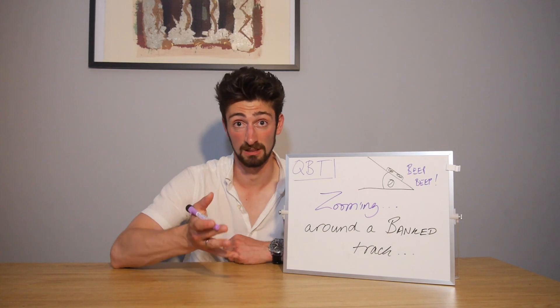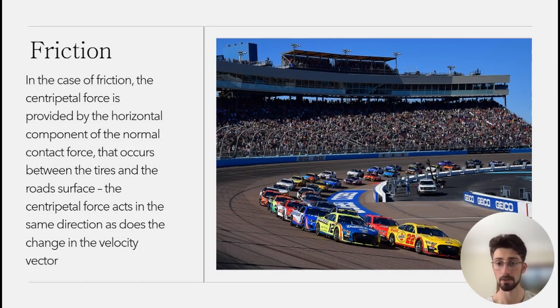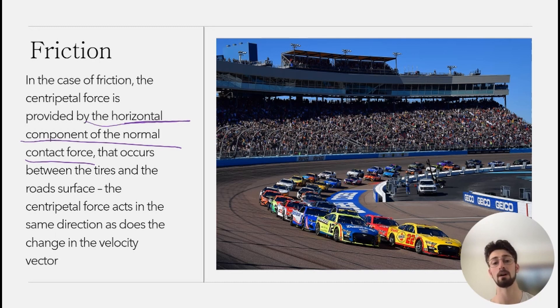Okay, welcome back. So let's talk about friction for a little bit. Let's talk about banked tracks and what that means in terms of circular motion. We've got a nice NASCAR racetrack over here, and you can see that the curve here is banked—it's kind of set at an angle. When we're dealing with friction in particular, the centripetal force is provided by a specific component. In the case of friction, the centripetal force is provided by the horizontal component of the normal contact force that occurs between the tires and the road surface.